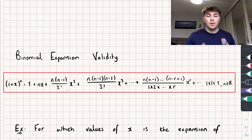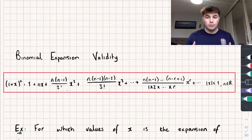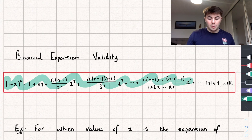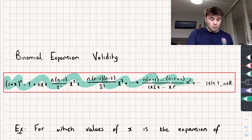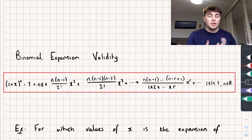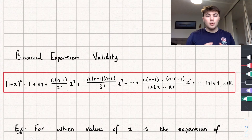Hello, in this video we're going to be talking about the range of values for which our binomial expansion is valid. It's probably worth knowing how this formula works, or at least having seen it before — if you haven't, I'll link my videos on that in the description. I'm also going to timestamp the different parts of the video, so if you're more interested in just seeing exam questions, you can skip through to them.